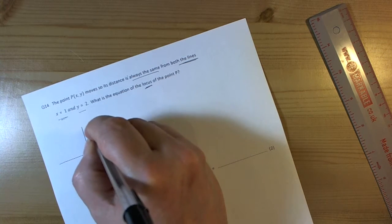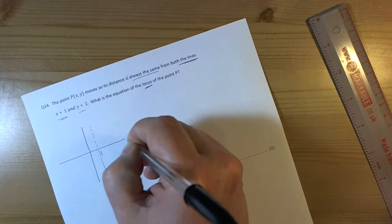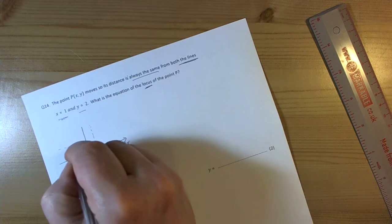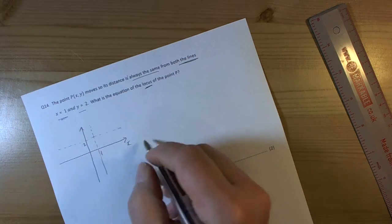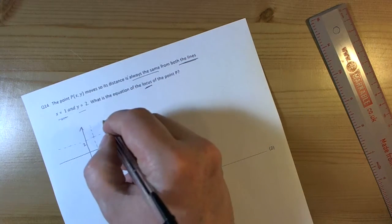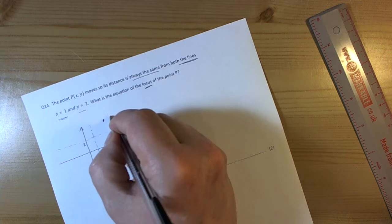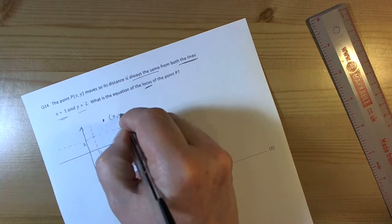So let's have a look, where x equals 1, well that's the line going through 1 on the x-axis, and then we've got y equals 2, so that's a horizontal line going through the y-axis at the point 2. And we've got this general point P anywhere in space, so that's got the coordinate x and y.